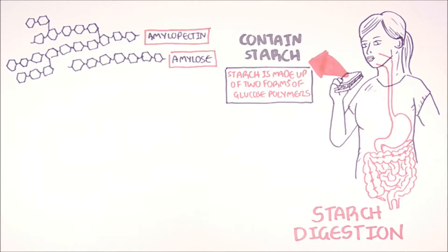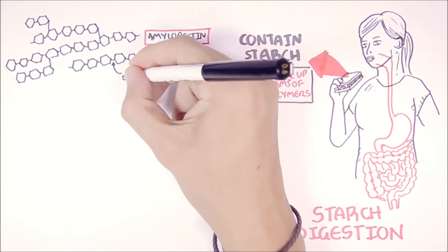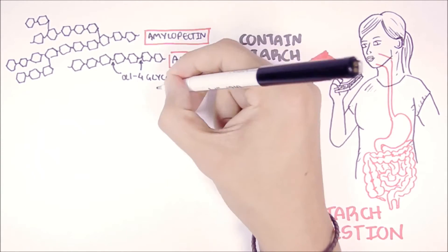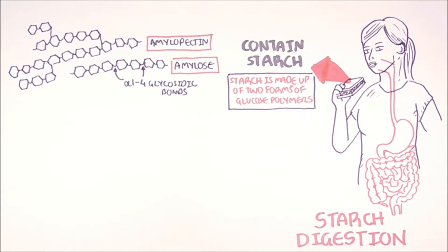These are the linear amylose and the branched amylopectin. Amylose is a linear chain of glucose linked together by alpha-1,4 glycosidic bonds. Amylopectin are linear chains of glucose with branch points, creating a tree-like figure.